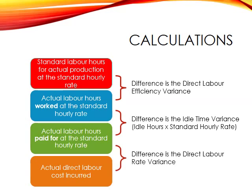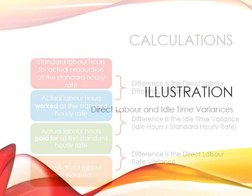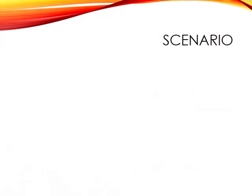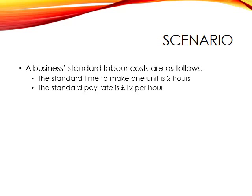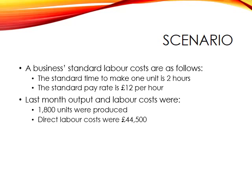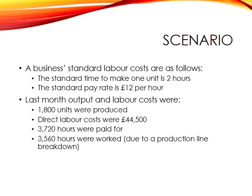The difference between the last two figures is the direct labour rate variance. Looking at an illustration: the standard labour cost requires two hours per unit at £12 per hour. Last month, we produced 1,800 units; direct labour costs were £44,500; 3,720 hours were paid for; and 3,560 hours were worked — the difference being due to a production line breakdown. We now have all the figures required to calculate all of our different labour variances.